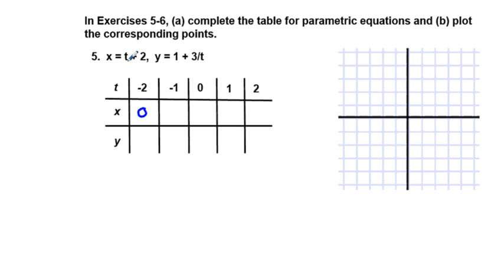The next point, if T is negative 1, well, negative 1 plus 2 is going to be 1. And then if T is 0, 0 plus 2 is 2. And so we have an ongoing pattern here. 3 and 4.